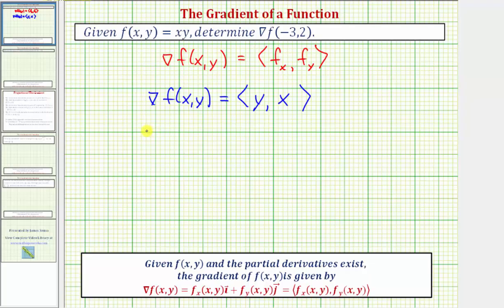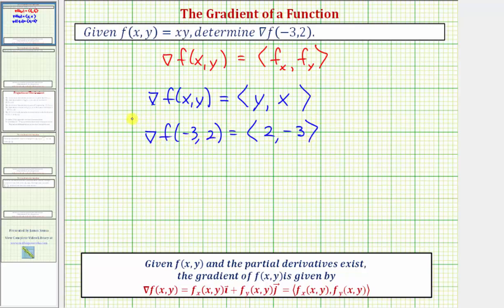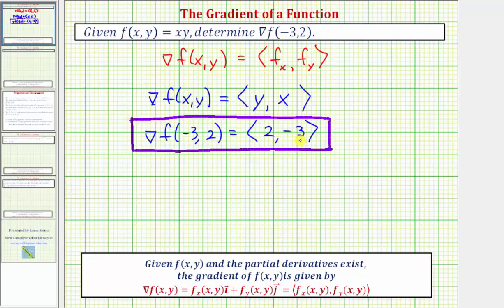Now we'll evaluate this at the point negative three, two. The x component is equal to y, which is two. The y component is equal to x, which is negative three. So the gradient of f at the point negative three, two is a two-dimensional vector with components two, negative three.